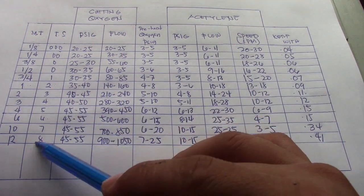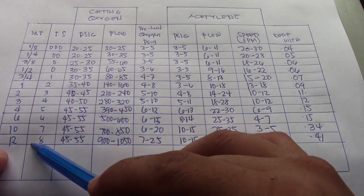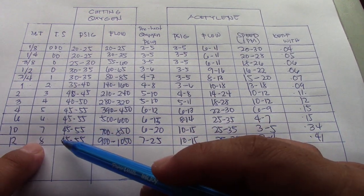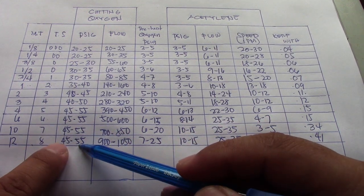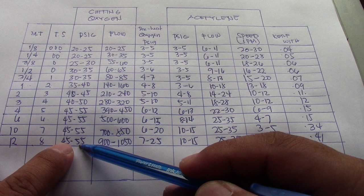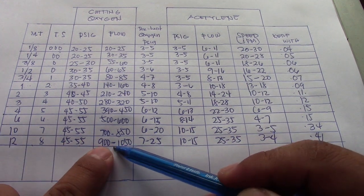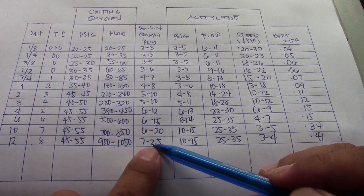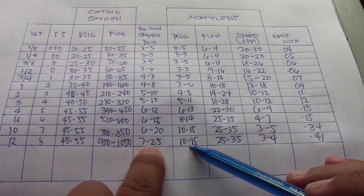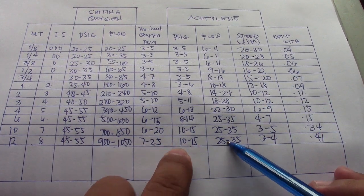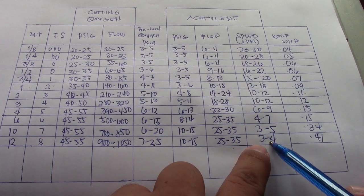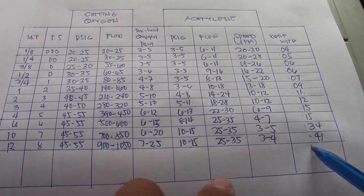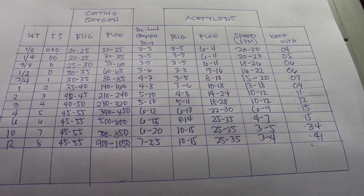For 12-inch thickness, you need tip size 8. The oxygen pressure is 45 to 55 PSI, flow is 900 to 1050. The preheat oxygen is 725, acetylene is 10 to 15, flow is 25 to 35. Speed is 3 to 4 inches per minute, and the kerf width is 0.41 inches.